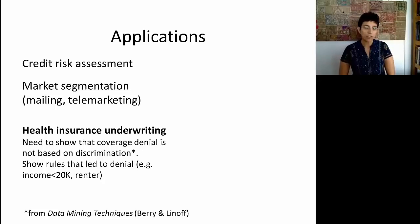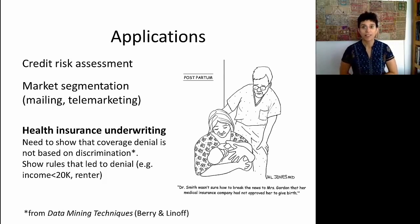Trees are awfully common in a wide variety of applications. You'll find them especially in applications where you need this transparency of how the x's affect the y. Examples are credit risk assessment, or a nice example from the book Data Mining Techniques by Berry and Linoff is health insurance underwriting, where you need to show that coverage denial is not based on discrimination. You can't just tell the person sorry, you're denied because that's what the algorithm told us, but instead you have to tell them exactly why they did not qualify.